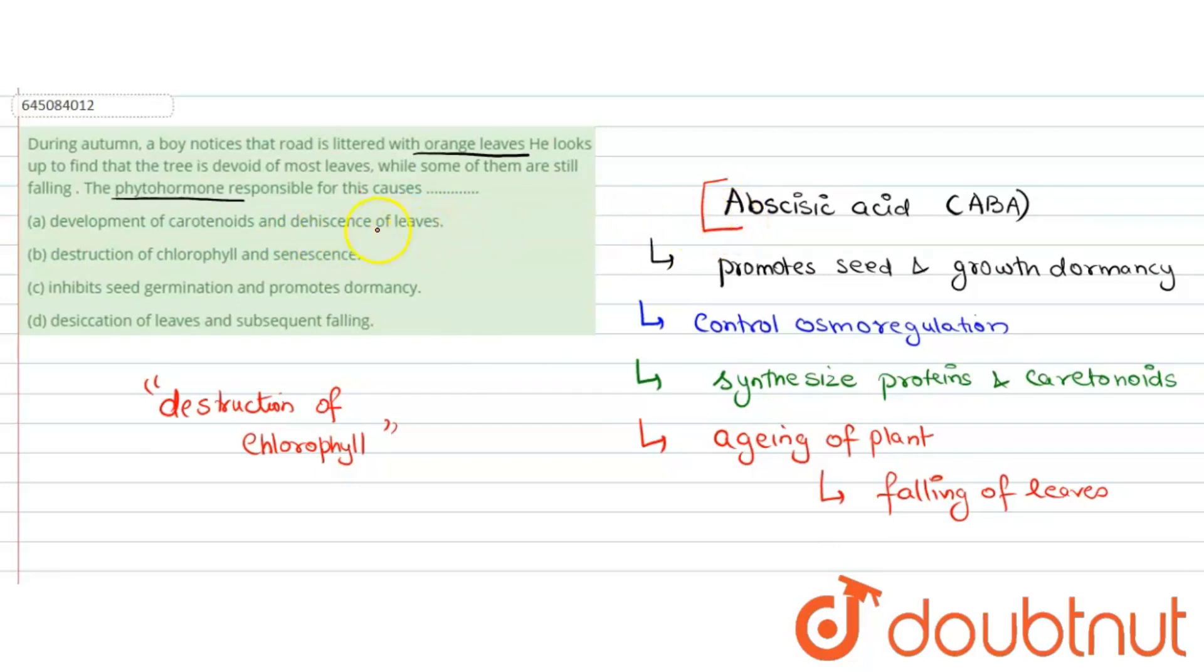Option B says destruction of chlorophyll and senescence. This is absolutely correct. The destruction of chlorophyll causes the orange leaves as mentioned in the question and subsequent falling from the tree. When there is destruction of chlorophyll, the leaves will not survive, hence they will fall off the trees, causing aging of the plant known as senescence. This is our correct option.